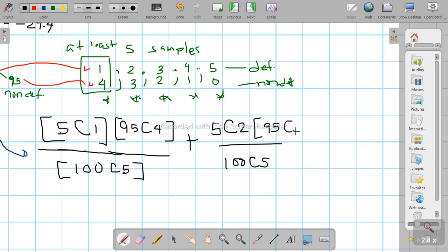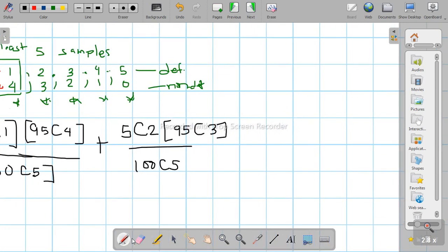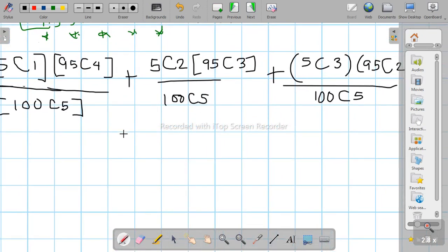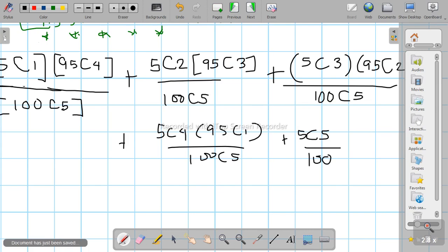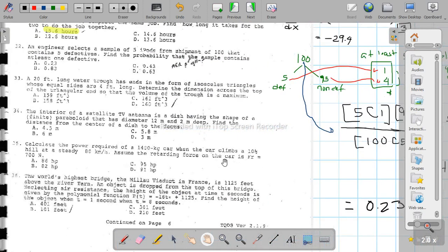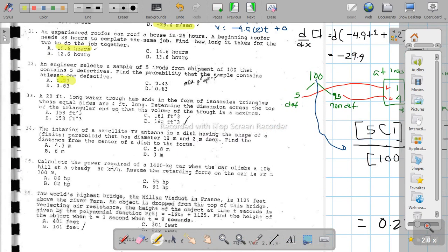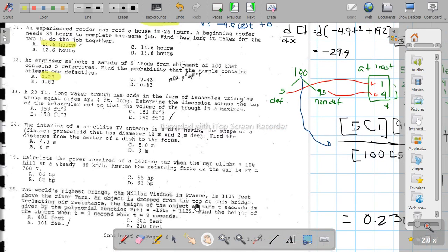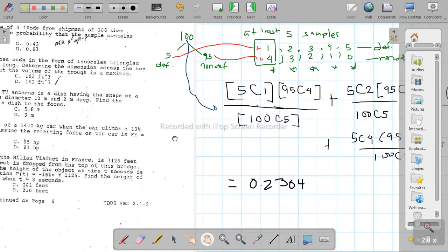Then we add the other cases with the same denominator. Case 2 is 5 choose 2 times 95 choose 3. Then 5 choose 3 times 95 choose 2, then 5 choose 4 times 95 choose 1, and finally 5 choose 5. Adding all these up over 100 choose 5 gives 0.2304. So there's a low chance, about 23%, of getting a defective in the 5 samples.